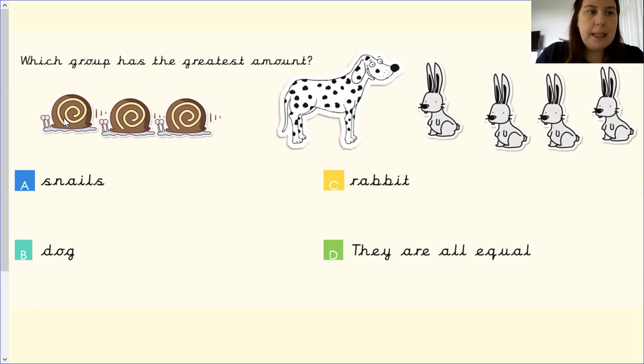So let's count the snails. One, two, three. How many dogs? One. And then how many rabbits? One, two, three, four. So which one has the greatest amount? Well done. It is C, the rabbits.